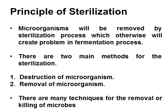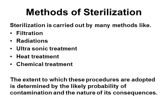Principle of sterilization: Microorganisms will be removed by the sterilization process, which otherwise will create problems in the fermentation process. There are two main methods for sterilization: 1. Destruction of microorganisms, and 2. Removal of microorganisms. Methods of sterilization are carried out by many techniques, including: 1. Filtration, 2. Radiations, 3. Ultrasonic treatment, 4. Heat treatment, and 5. Chemical treatment. The extent to which these procedures are adopted is determined by the likely probability of contamination and the nature of its consequences.